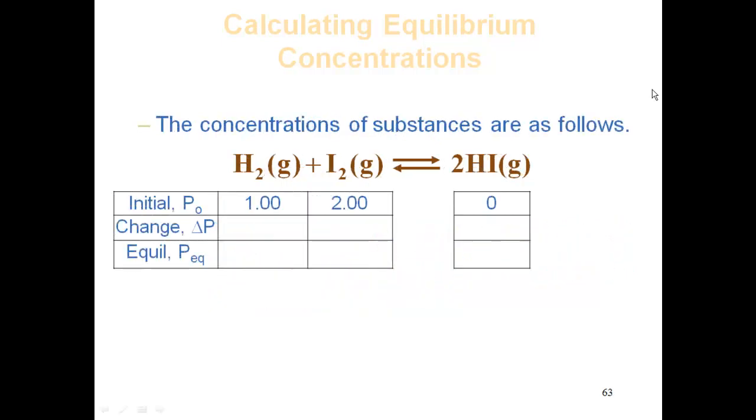We're going to have to set up our ICE table. So I have my initial, my change, and my equilibrium. I plug in my initial partial pressures, which are 1.00 for hydrogen and 2.00 for iodine, and zero for HI.